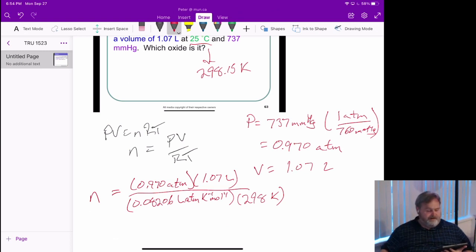Let me do the calculation. I've got my pressure in here times 1.07 divided by 0.08206 divided by 298. And there I get 0.0424 moles. And that's great. That seems to match my intuition.